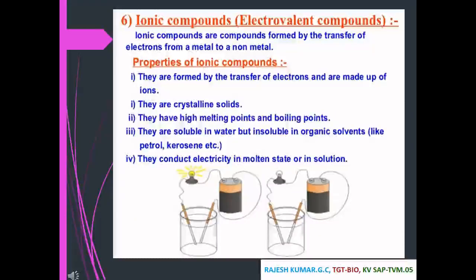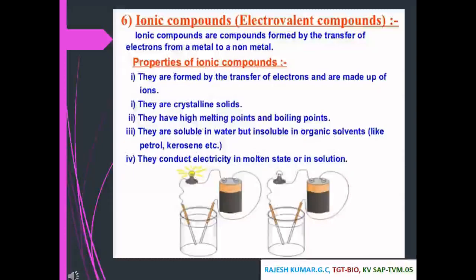Ionic compounds are also called electrovalent compounds — they are formed by the transfer of electrons from a metal to a non-metal. Properties of ionic compounds: they are made up of ions and are crystalline solids. They have high melting points and boiling points. They are soluble in water but insoluble in organic solvents like petrol and kerosene. They conduct electricity in molten state or in solution.